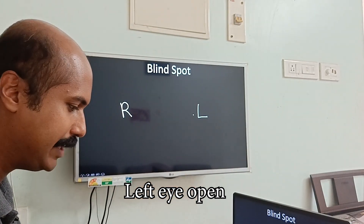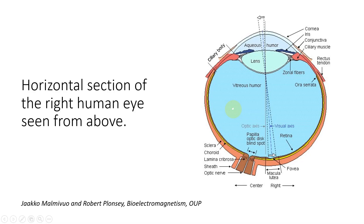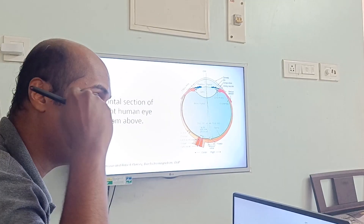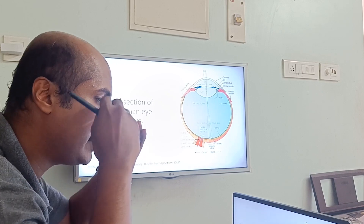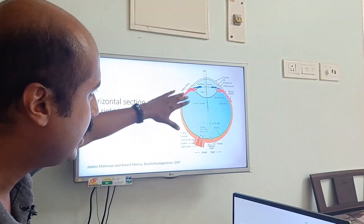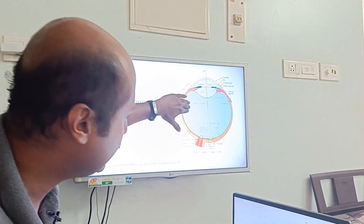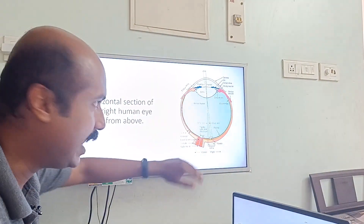Now what is the reason for this phenomenon? This is a horizontal section of the right human eye seen from above - that means I have cut the right eye and am looking at the right eyeball from above. In this you can see that the retina is on the back side, on the rear of the eye.